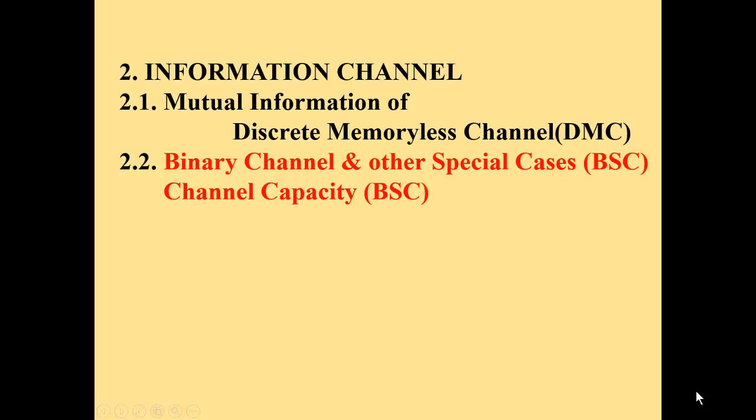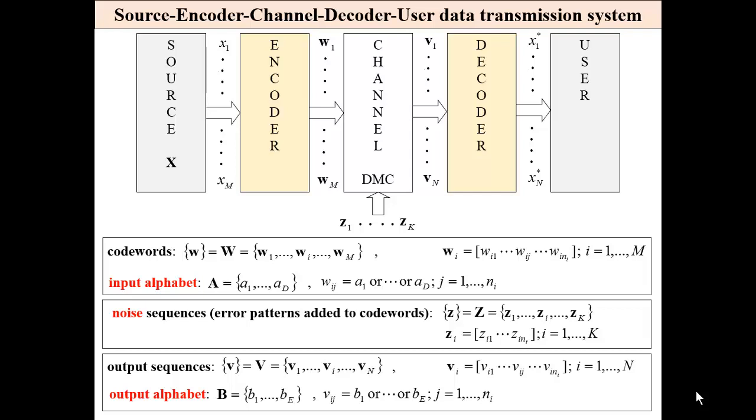Information channel and transmission of codewords. This is a communication system: encoder, output of the encoder, codewords, channel, noisy channel, this is noise and output, input of the decoder, received sequences. We may assume that we have different alphabets at the input and at the output. Input alphabet is A and the output alphabet is B.